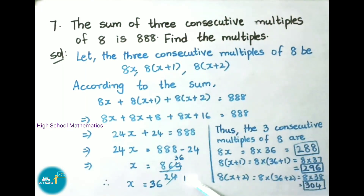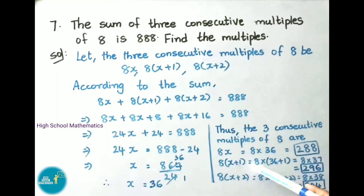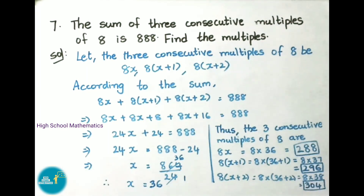24 times 36 is 864. Therefore we got x value as 36. Thus the 3 consecutive multiples of 8 are: 8x, that is 8 into 36, which is 288. Next 8 into x plus 1, that is 8 into 37, which is 296. Next 8 into x plus 2, that is 8 into 38, which is 304. Therefore the 3 consecutive multiples of 8 are 288, 296 and 304.